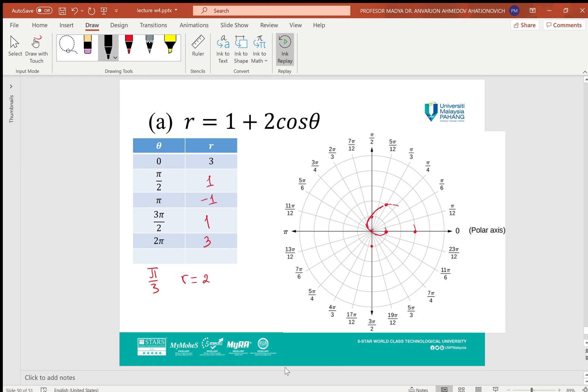For example, when θ = 0, R = 3—this is the point. At π/2, it is 1. At π, R = -1. Negative 1 should be in the other direction because -1 will rotate to π; it is inside.